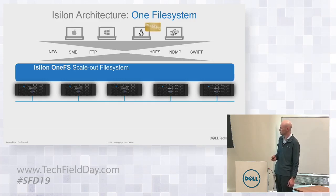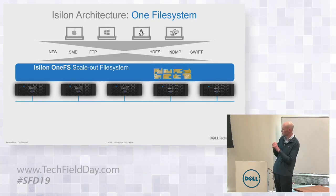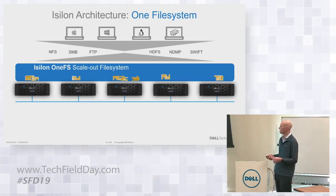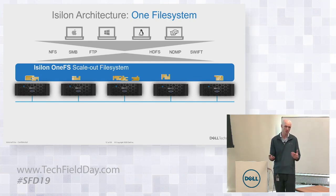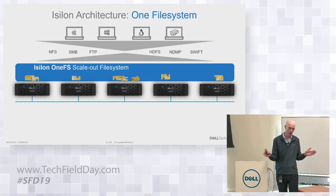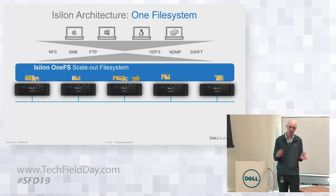One file system: a file is written into one of the nodes, that node distributes the file across the whole cluster, and that file can then be accessed by any of the nodes. When we expand the file system by adding nodes, we also expand the way users talk to the file system — which means you don't even have to reconfigure that; they'll just get more performance grunt over time.